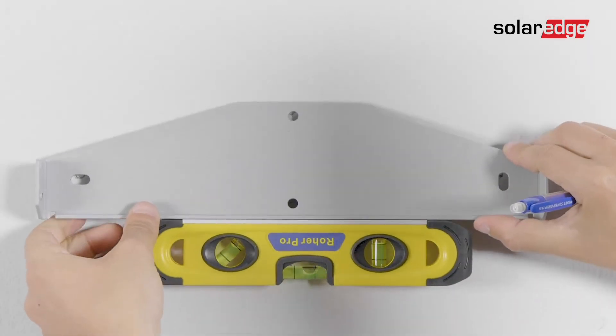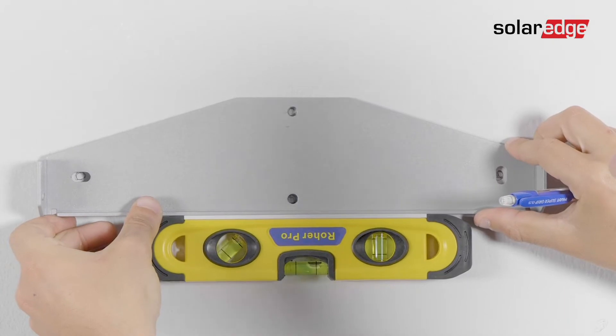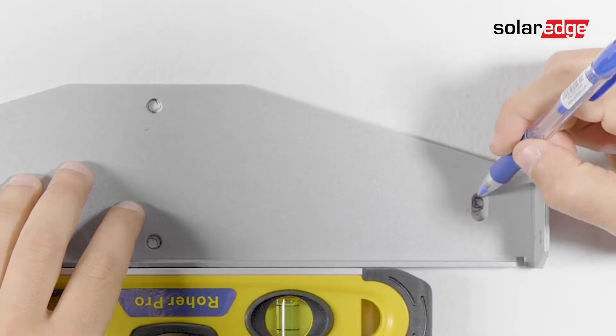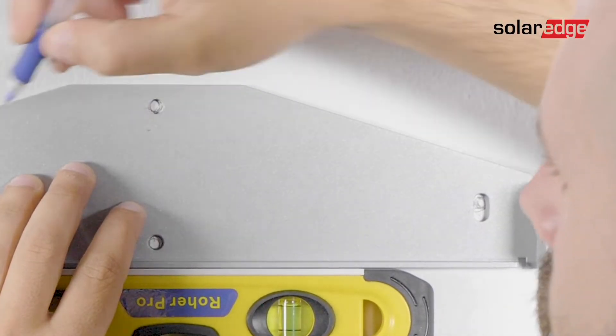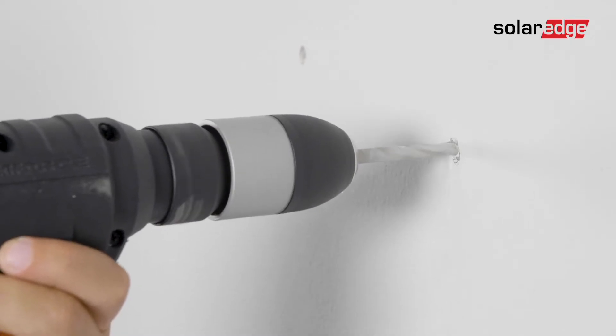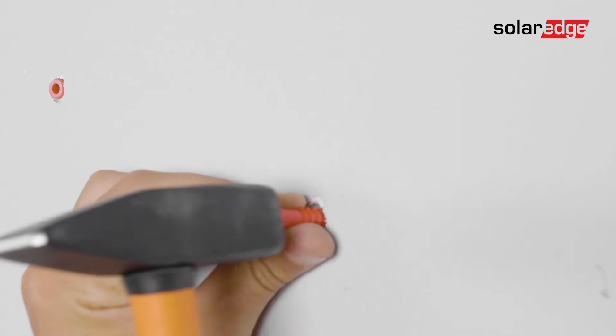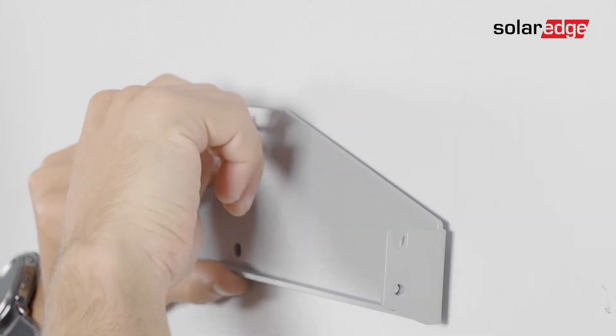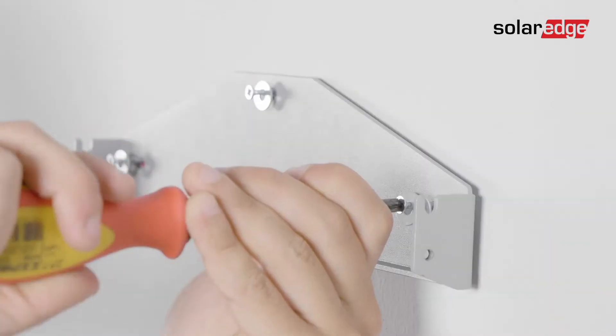We start by mounting the inverter. Position the mounting bracket against the wall and mark the drilling hole locations. Drill the holes and mount the bracket. Fasten the bracket using a standard bolt and verify that the bracket is firmly attached to the mounting surface.